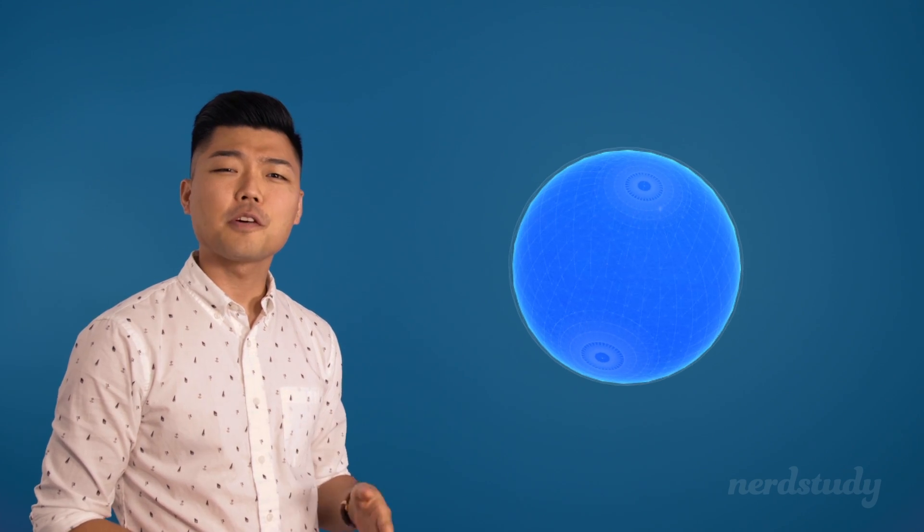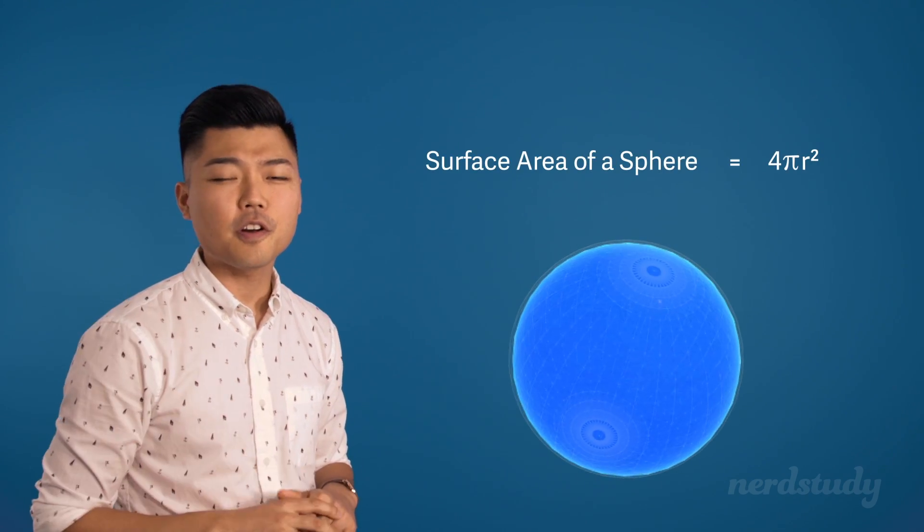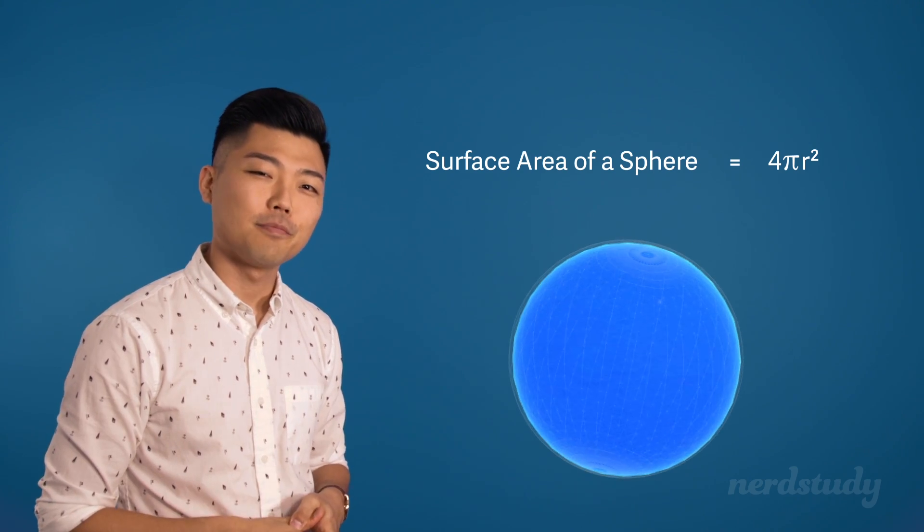Well, we've got ourselves a formula that does this very thing for us. It goes a little something like this. Surface area of a sphere equals four times pi times r squared. Good.